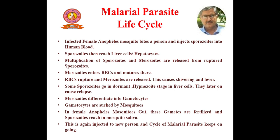They later cause relapse. Merozoites differentiate into gametocytes, which are sucked by mosquitoes. In the female Anopheles mosquito gut, these gametes are fertilized and sporozoites reach the mosquito saliva, which is again injected into a new person, and the cycle of the malarial parasite keeps going.